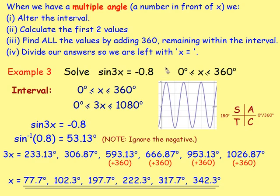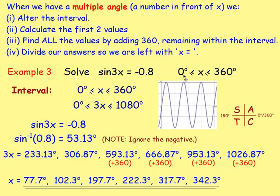That led into multiple angles. If you have a number in front of x — like sine 3x or cos 2x — you first have to alter the interval. Here we have 3x, so multiply both interval values by 3. Then keep adding 360, getting all answers between 0 and 1080, and then correct for that by dividing by 3. Make sure you answer in degrees if asked, and check all answers lie between 0 and 360.